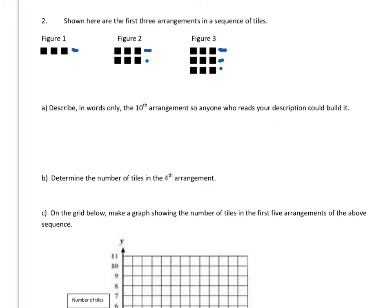So then Part A, the tenth arrangement. Well, I would have ten rows of three tiles. And then the number of tiles in the fourth arrangement would be twelve.